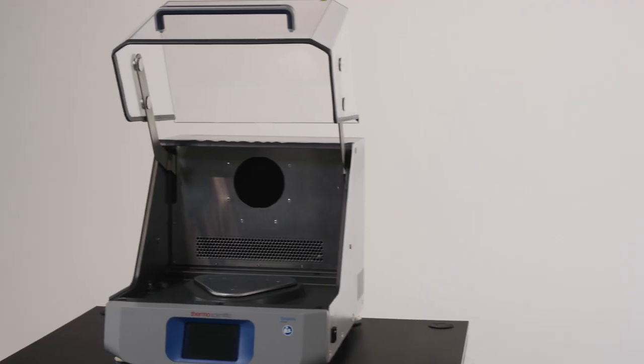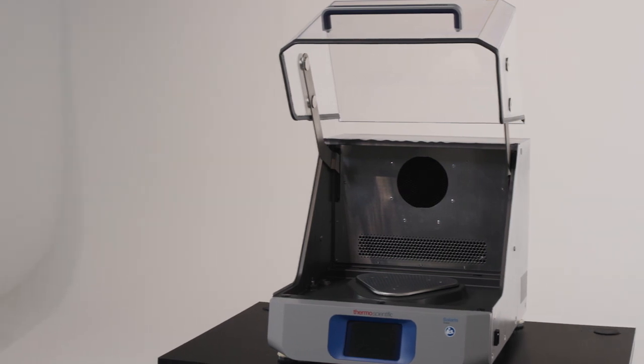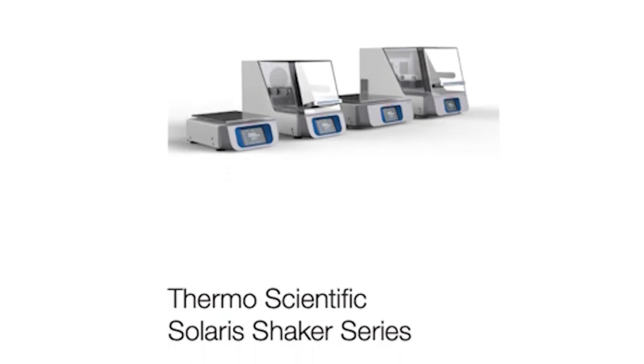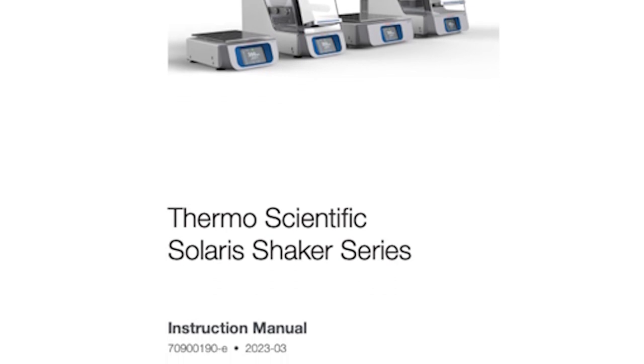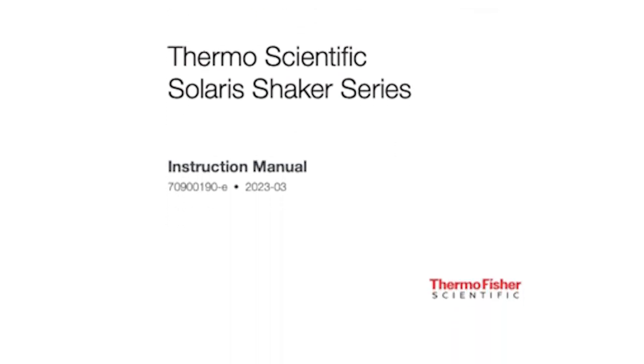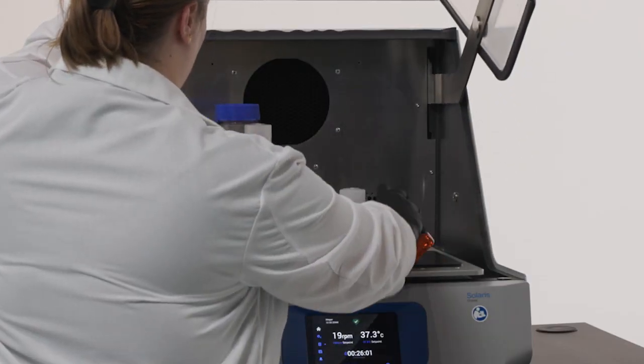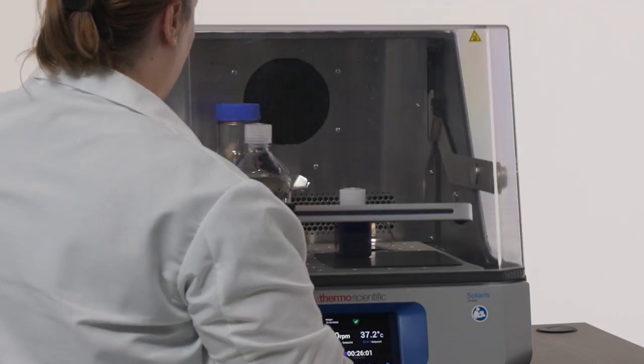The platform and some shaker clamps can be autoclaved at 121 degrees Celsius for 20 minutes. To confirm compatibility, please review the Solaris benchtop shaker owner's manual or connect with our sales support team. The Solaris shaking mechanism blends consistent performance with a heavy-duty, triple eccentric, maintenance-free design that's protected by a 10-year warranty.